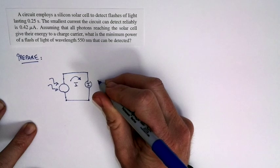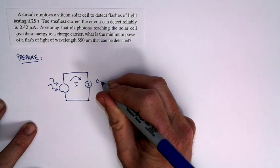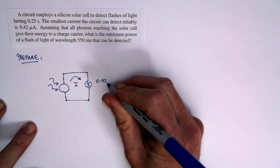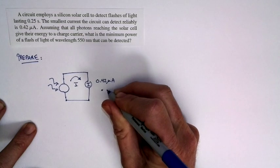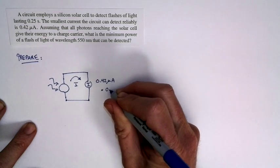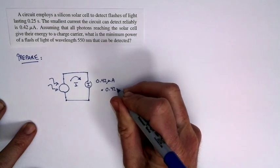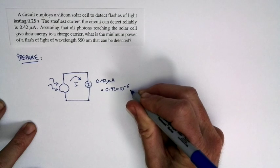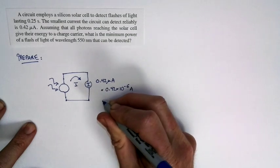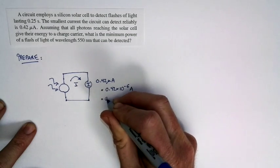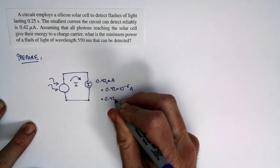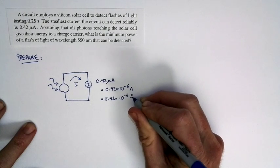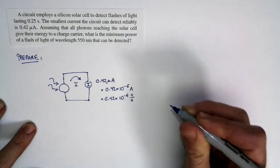The smallest possible current that the circuit can detect is 0.42 microamps, which is 0.42 times 10 to the negative 6 amps, which is equal to 0.42 times 10 to the negative 6 coulombs per second.